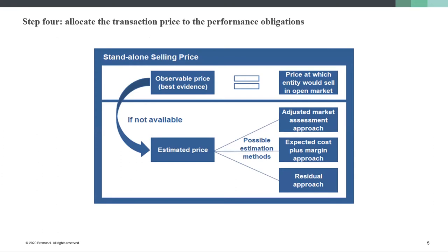The first approach is the adjusted market assessment approach. In a nutshell, that means: what do your competitors actually charge for this? For example, if you are Honda Motor Car, you can gather pricing from Nissan or Toyota to come up with an estimated standalone selling price. The issue with this approach is that most companies do not know their competitors' pricing — it's a trade secret in most situations.